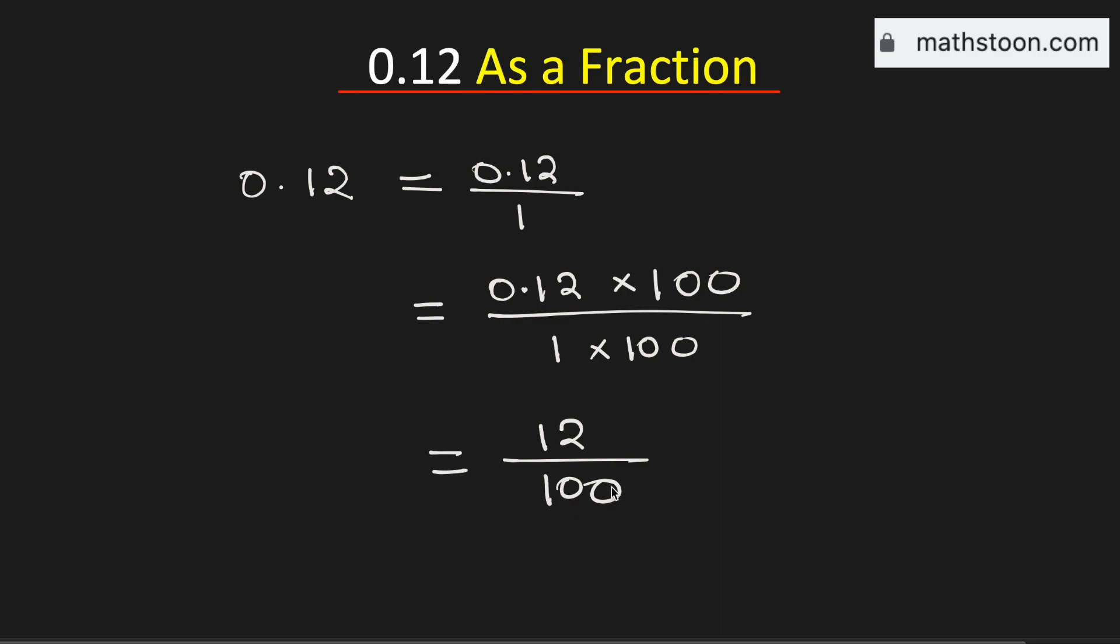See that this fraction is not simplified, and we need to simplify it. We see that 4 divides both the numerator and the denominator. So dividing them by 4, we get 3 in the numerator and 25 in the denominator.